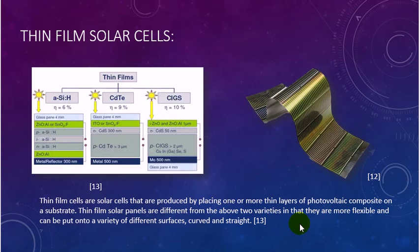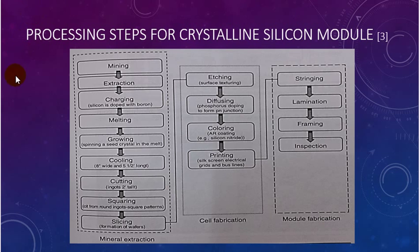Now we move to processing strategy for crystalline silicon modules. There are so many steps to produce solar cells, starting from mining, extraction, charging, milling, growing, cooling, cutting, squaring, and slicing. This is for mineral extraction.